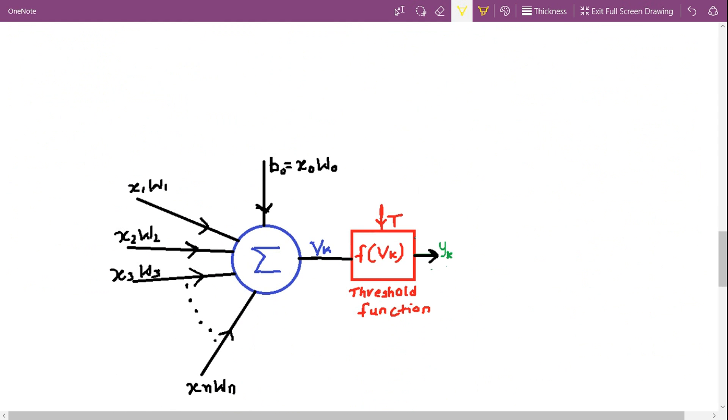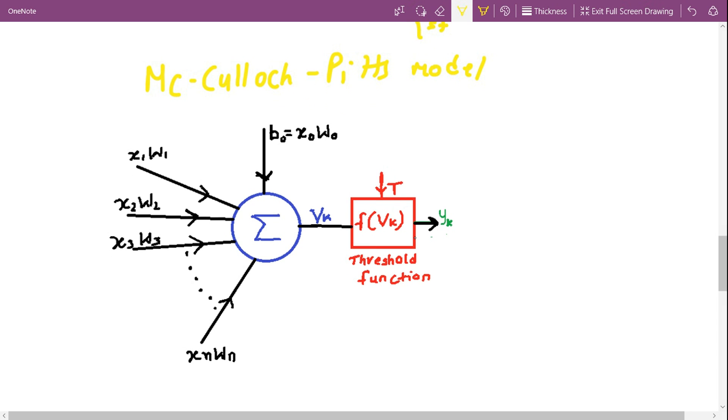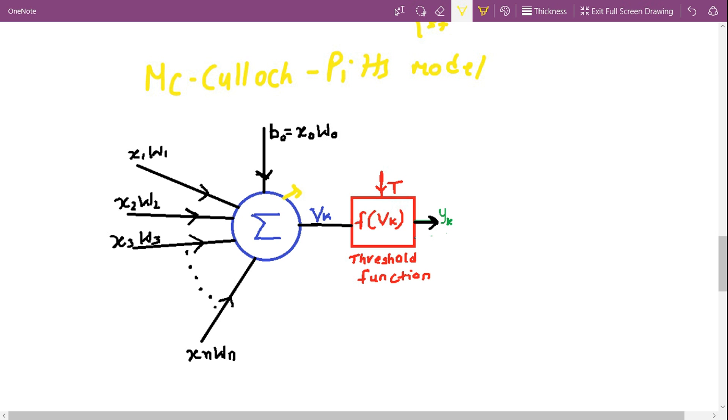So this is a simple artificial neuron model, this is called the McCulloch-Pitts model. This is considered as one of the first neuron models. Let me explain the functionality how it works. The neuron in this case is this blue circle. It's just a summation function. It basically sums up all the input signals multiplied by their respective weights.